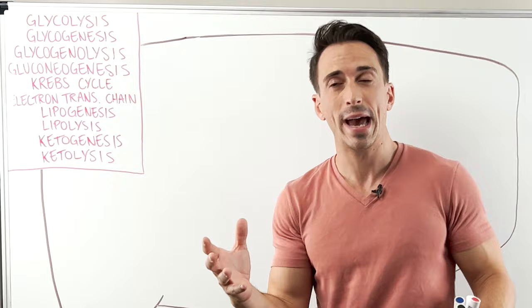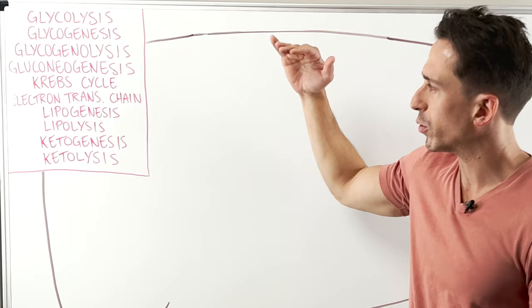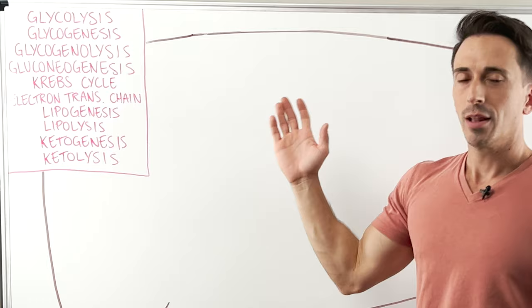So we're gonna look at glycolysis, glycogenesis, glycogenolysis, gluconeogenesis. Those words are starting to sound the same now. Krebs cycle, electron transport chain, lipogenesis, lipolysis, ketogenesis, and ketolysis. Let's start.